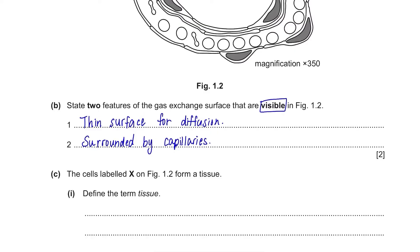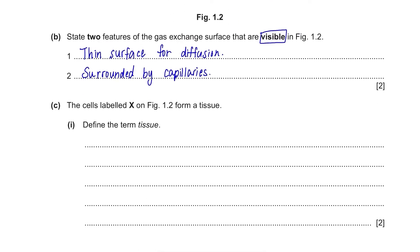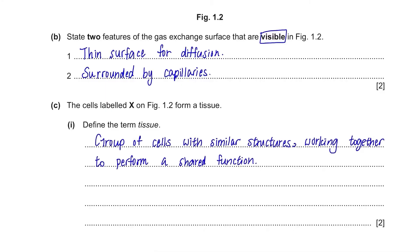Part C: The cells labelled X on figure 1.2 form a tissue. Define the term tissue. Just a common definition that needs to be memorized: it's a group of cells with similar structures working together to perform a shared function.